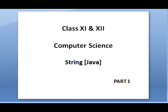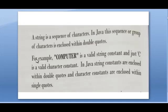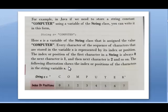We are going to study about strings in Java. First, a string is a sequence of characters — letters and alphabets. In Java, this sequence of characters is enclosed within double quotes. For example, 'computer' enclosed within double quotes is a valid string constant. A character enclosed in single quotes is a valid character constant. String constants use double quotes; character constants use single quotes.